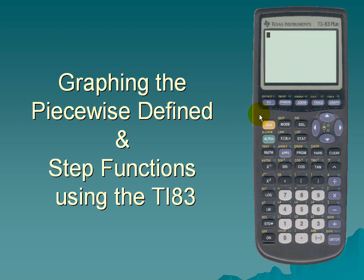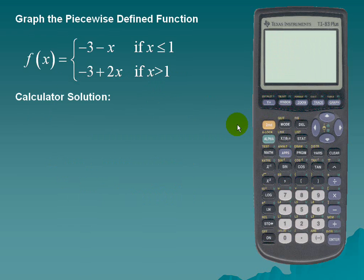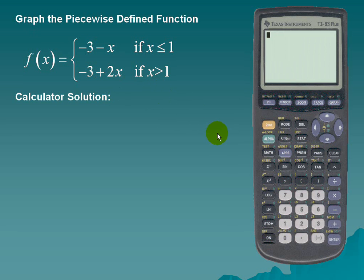Graph the piecewise defined and step functions using the TI-83 calculator. We'll graph the piecewise defined function: f(x) = -3 minus x if x is less than or equal to 1, and f(x) = -3 plus 2x if x is greater than 1.